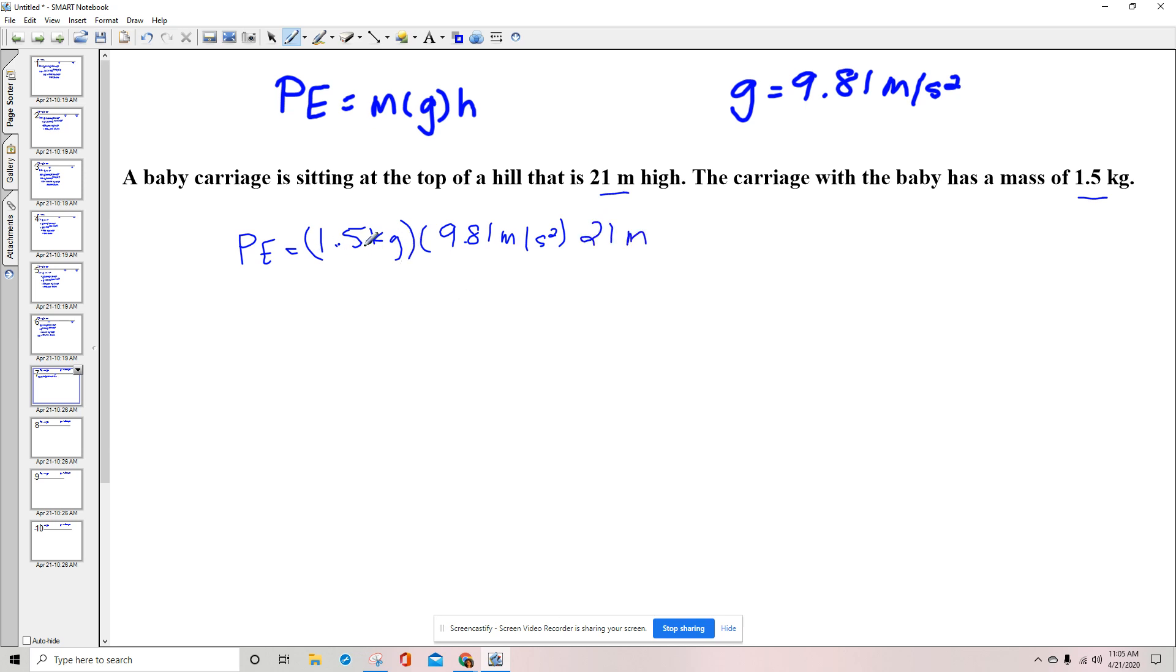Now the math we can just multiply the numbers straight across, but I want to talk to you for just a second about what happens to the units. We multiply kilograms times meters per second squared times meters. So what we end up with is kilograms times meters squared per second squared, which equals joules.